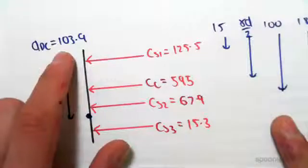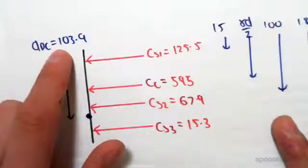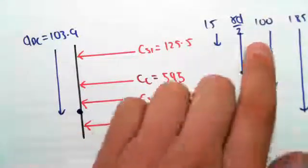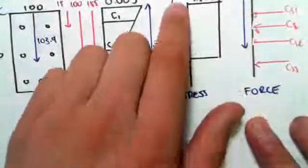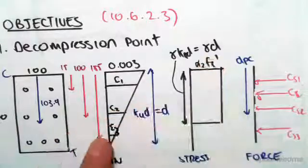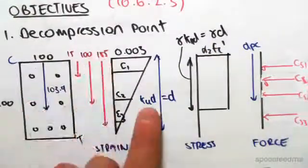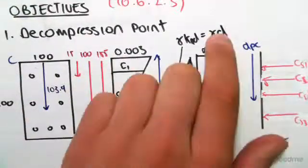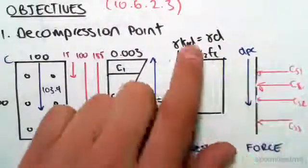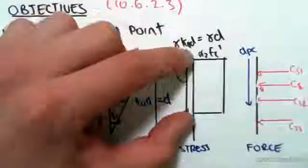The distance of our plastic centroid we found in the previous videos was 103.9 from the top. And the compression in our concrete, so that acts at this distance here was gamma KUD, which we know is gamma D because of this problem we have, that the KUD equals D. So the distance from the top to the compression in the concrete would just be gamma D divided by two.